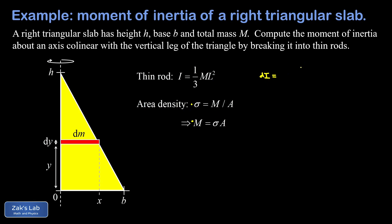We're going to call that dI because it's an infinitesimal contribution to the total. That gives me one third times the mass of that little rod which is dm, multiplied by the length of that little rod squared - and that variable length we called it x in the diagram.